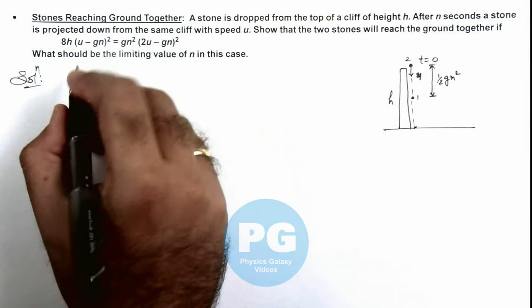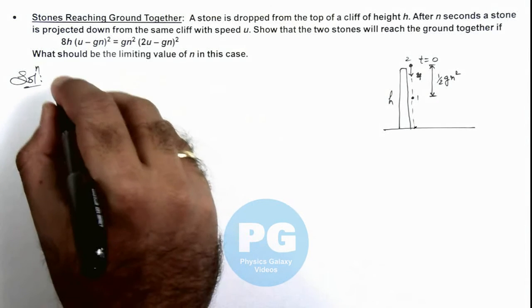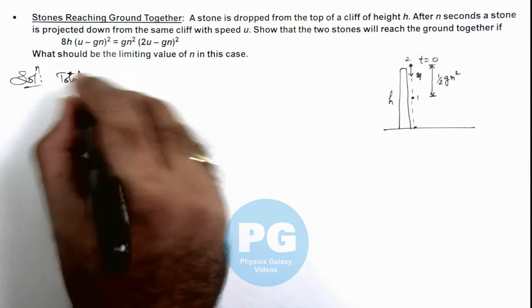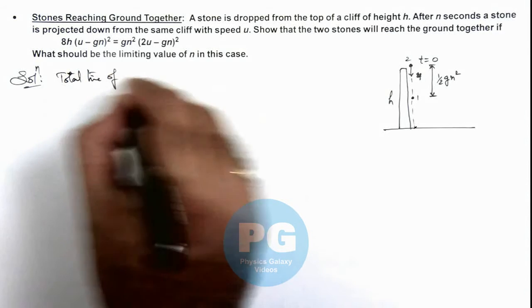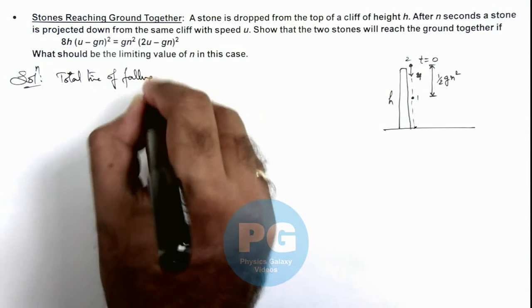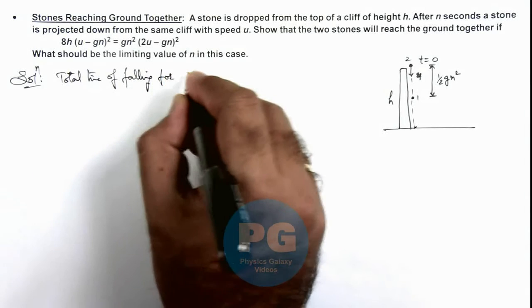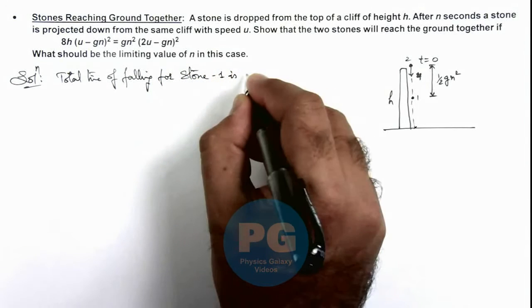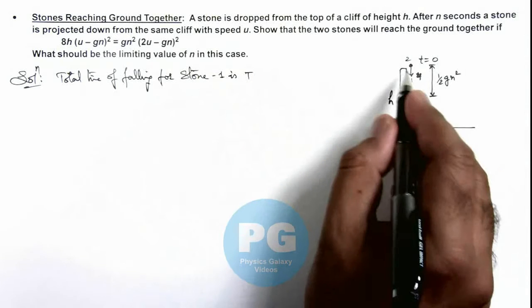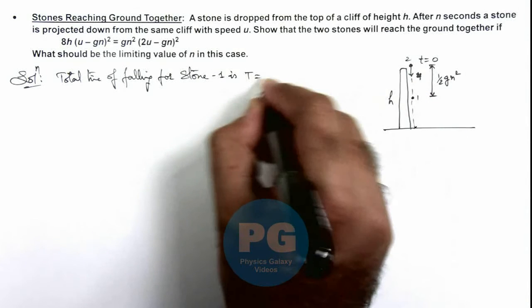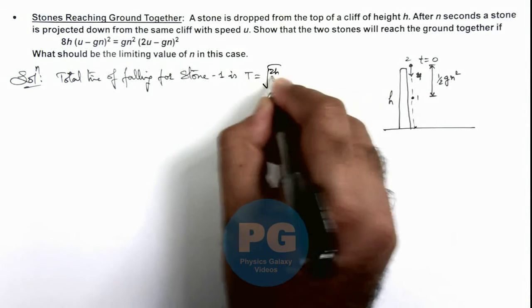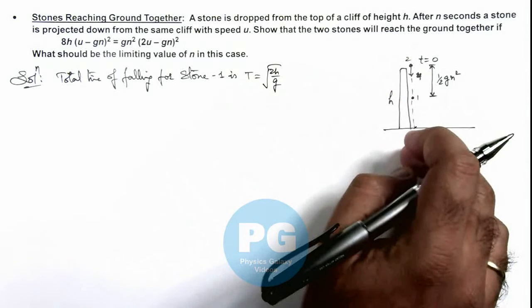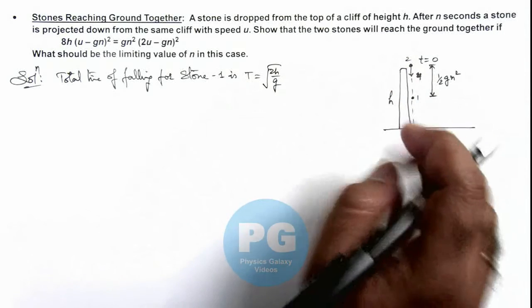That means if we calculate the total time of falling for stone 1, the total time in which stone 1 will reach the ground is root 2h by g, as it is falling in free fall from a height h with initial speed zero.